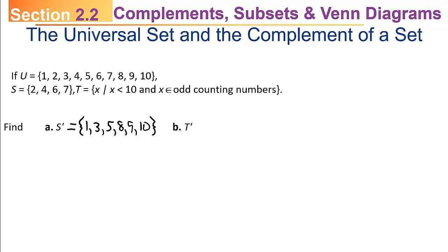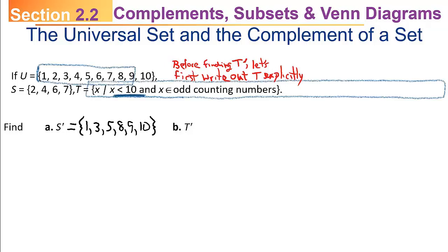Now let's find T complement. First, I noticed that T was written in set builder notation, so the first thing I would do is write out T explicitly. We're looking for numbers less than 10 that are inside the universal set — that would be 1, 2, 3, 4, 5, 6, 7, 8, 9 — but we also want those to be odd counting numbers. So T is simply the set containing 1, 3, 5, 7, and 9.